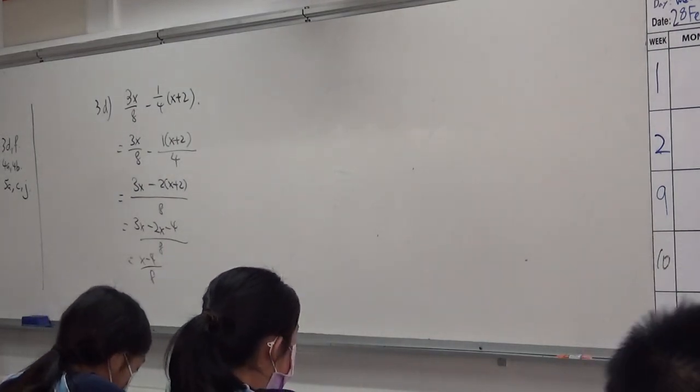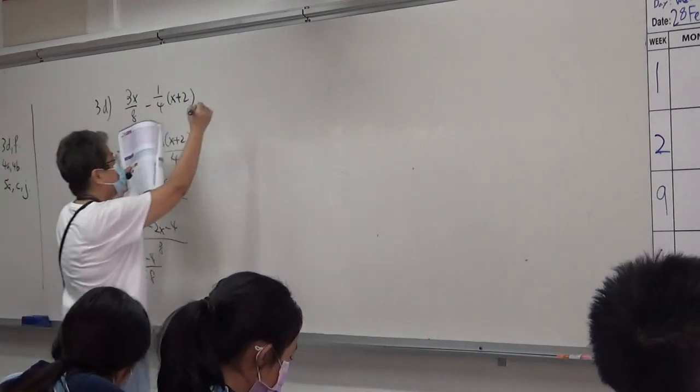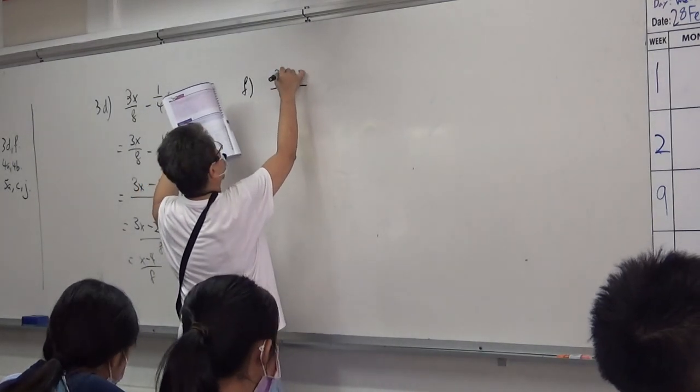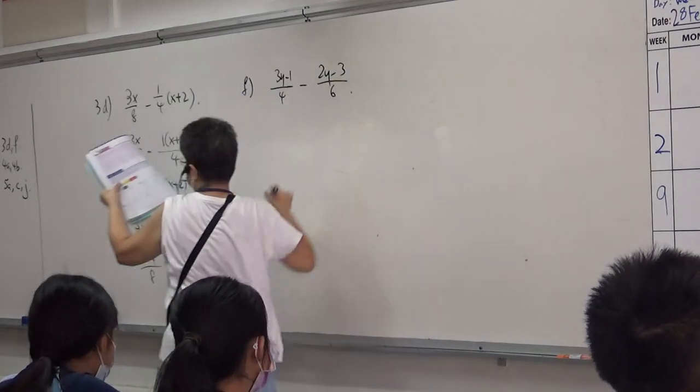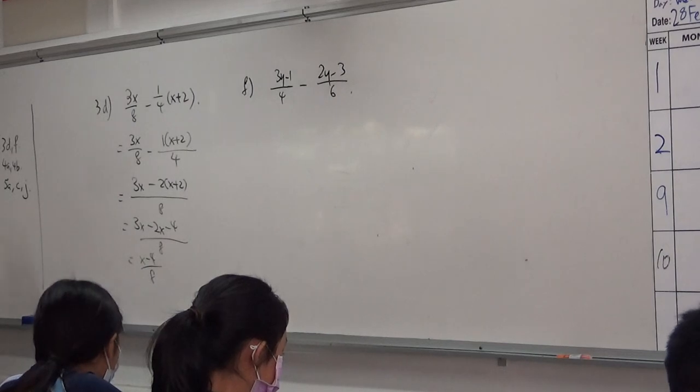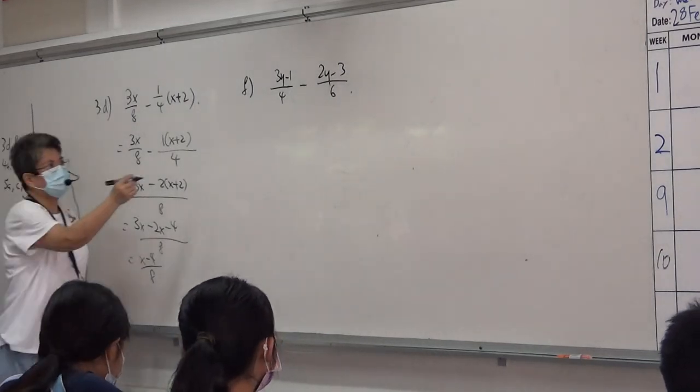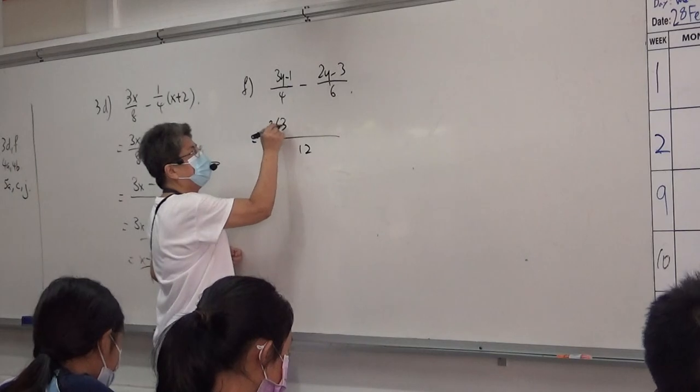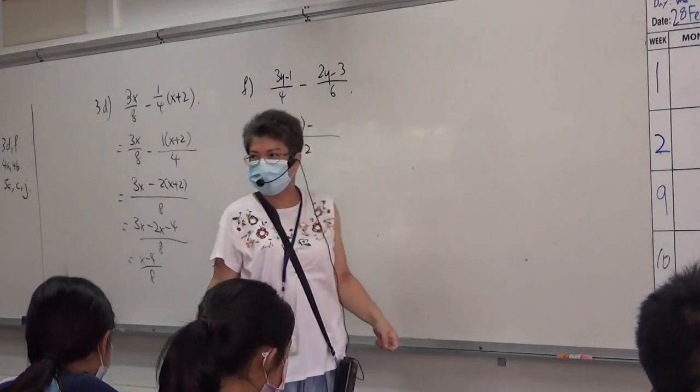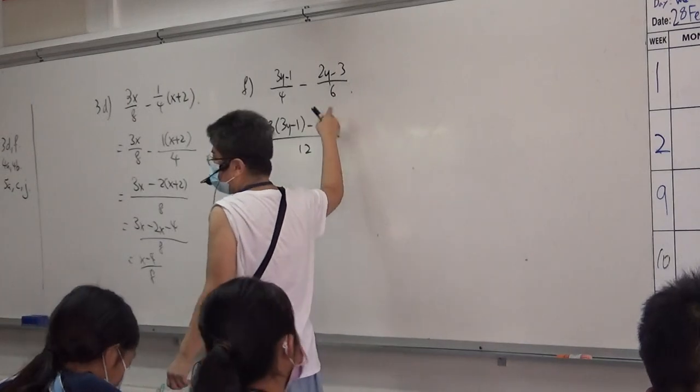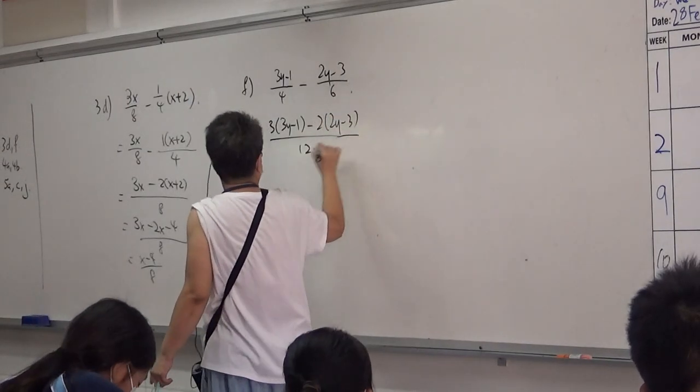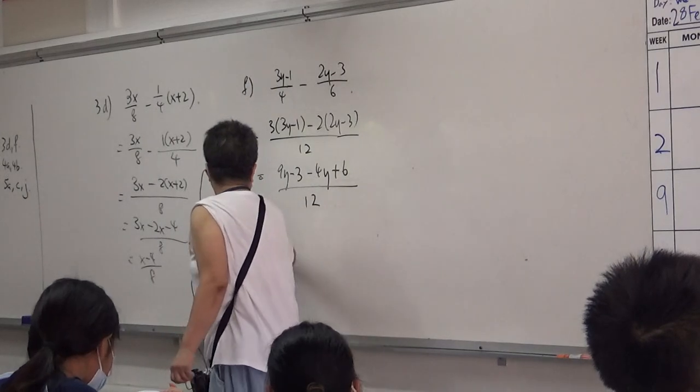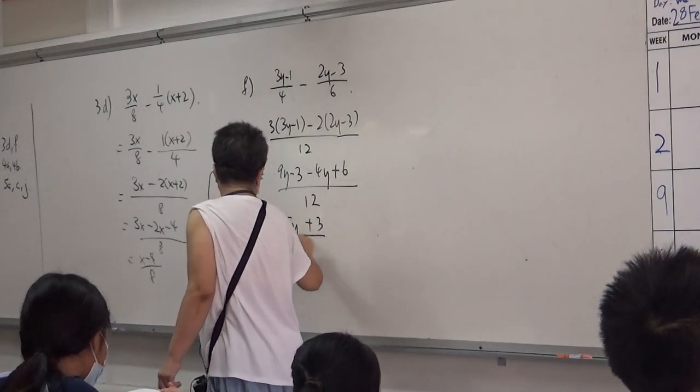3X. 3X. 4 and 6, can you tell me, change to 1? 12. Very good. 12 divided by 4 is 3. 12 divided by 6 is 2. Expand. 9Y minus 3 minus 4Y plus 6 over 10.